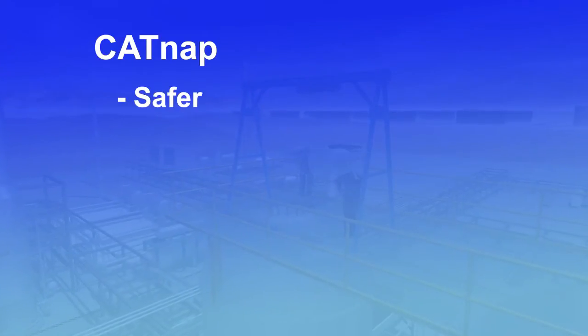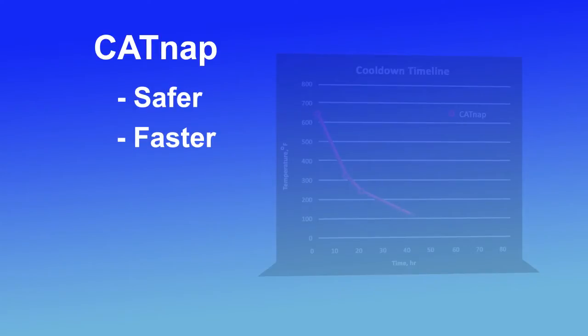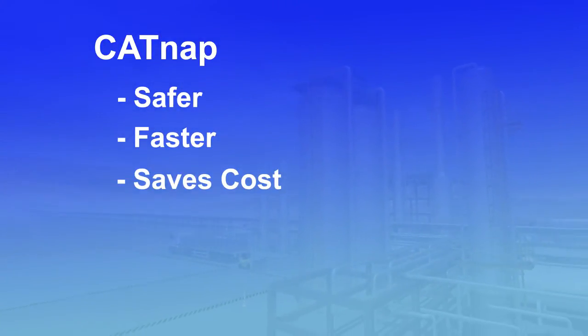CATNAP is safer because it eliminates inert entry and pyrophoric dust. Is faster because it reduces the unit shutdown time and allows for faster unloading. Saves cost because it reduces lost production by shortening the turnaround time and eliminating nitrogen expenses for inert entry.